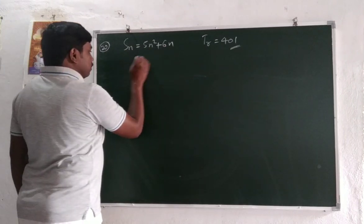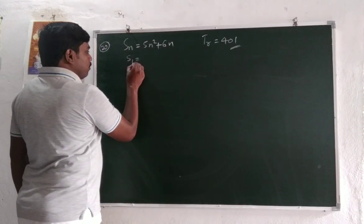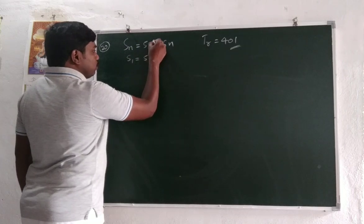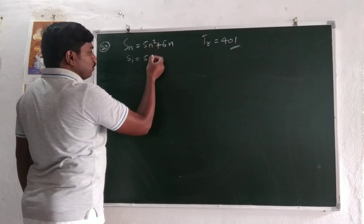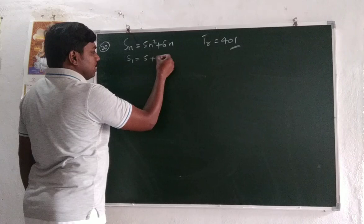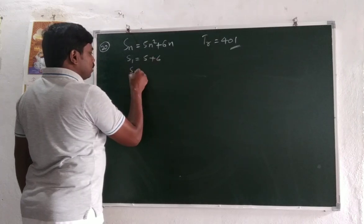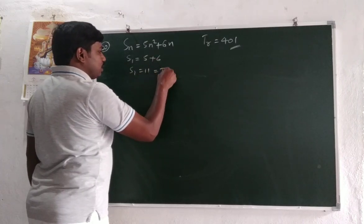Sum of n terms - suppose n is equal to 1. Sum of 1 term is 5 times 1² which is 5, plus 6 times 1 which is 6. First term is 11. This is the first term.